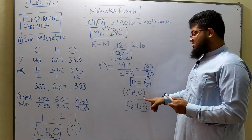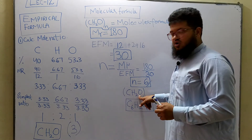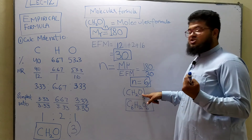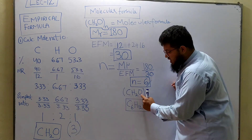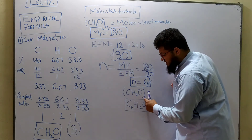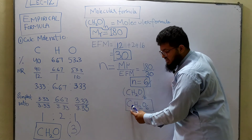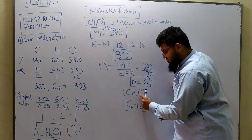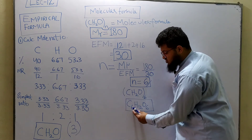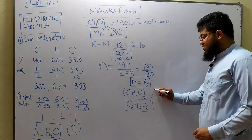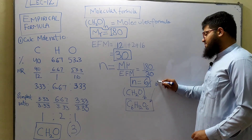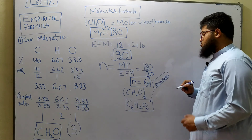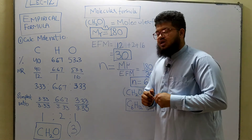This value of n = 6 gets multiplied by each atom inside the empirical formula. 6 × 1 carbon = C₆; 6 × 2 hydrogen = H₁₂; 6 × 1 oxygen = O₆. So the molecular formula is C₆H₁₂O₆ — you guys know what this is — this is the formula for glucose! This is how you convert an empirical formula into a molecular formula using the molecular formula mass.